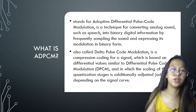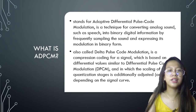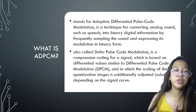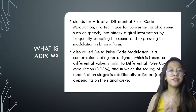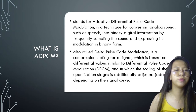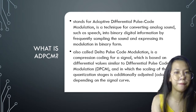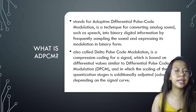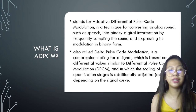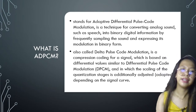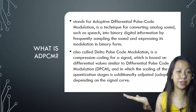It is also called Delta Pulse Code Modulation. It is a compression coding for a signal which is based on differential values similar to Differential Pulse Code Modulation, or DPCM, and in which the scaling of the quantization stages is additionally adjusted and adapted depending on the signal curve.